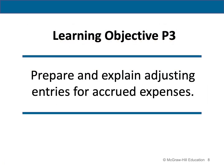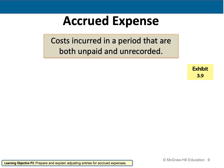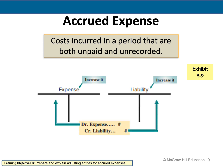Now let's move to the fourth learning objective, which is to prepare and explain adjusting entries for accrued expenses — the costs incurred in a period that are both unpaid and unrecorded.